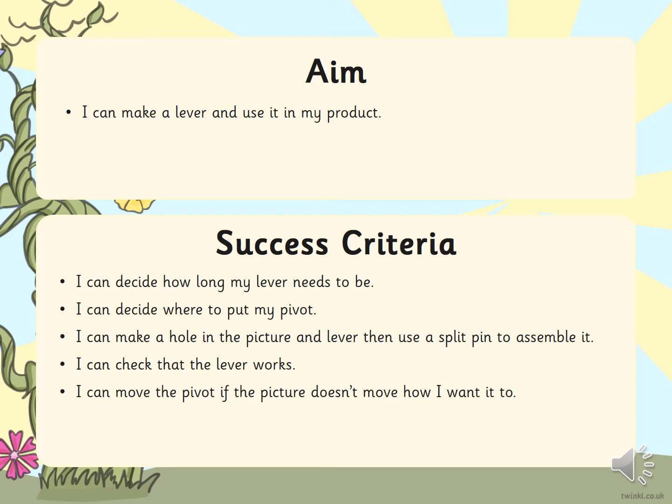We need to decide how long our lever needs to be, decide where to put our pivot, make a hole in the picture and lever and then use a split pin, check that it works, and move it if it isn't working.